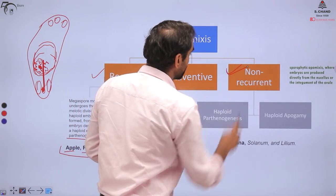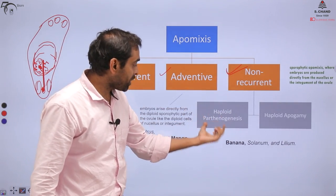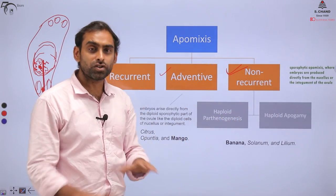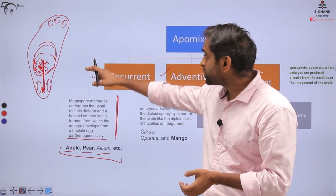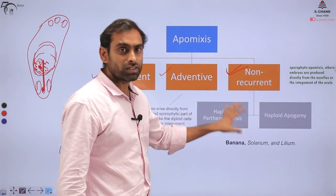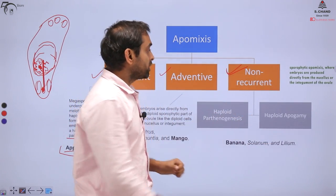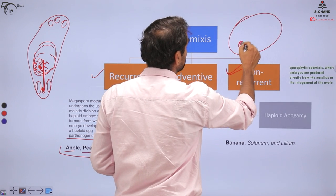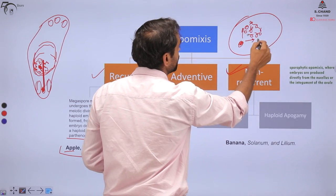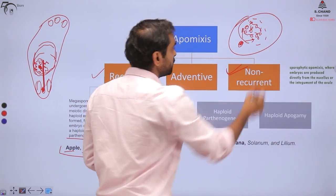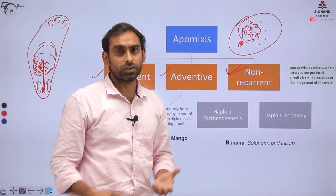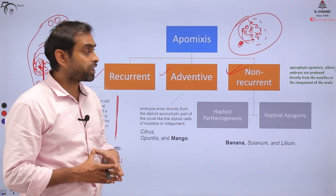The second type is Non-recurrent Apomyxis, which is divided into haploid parthenogenesis or haploid apogamy. Here also, the embryo is formed without fertilization — the egg cells or mother cells start dividing mitotically and eventually differentiate. But in this case it does not recur; it appears in a non-recurrent manner.